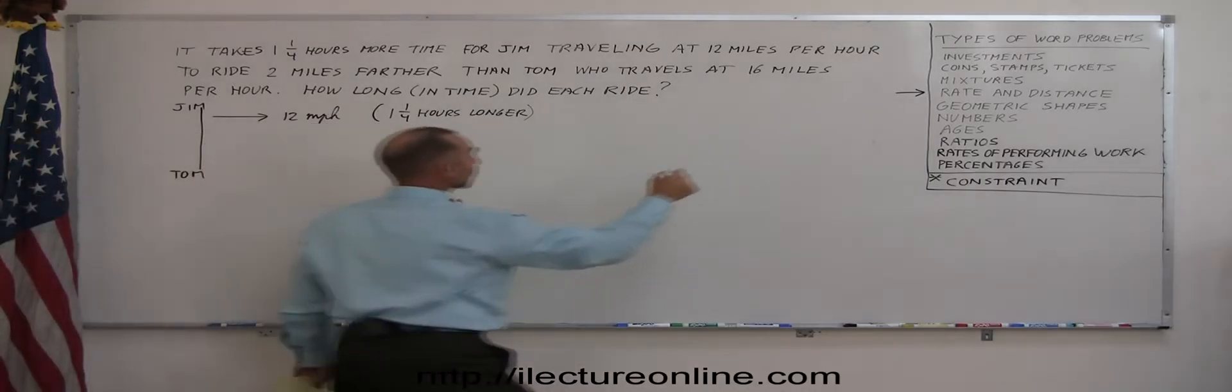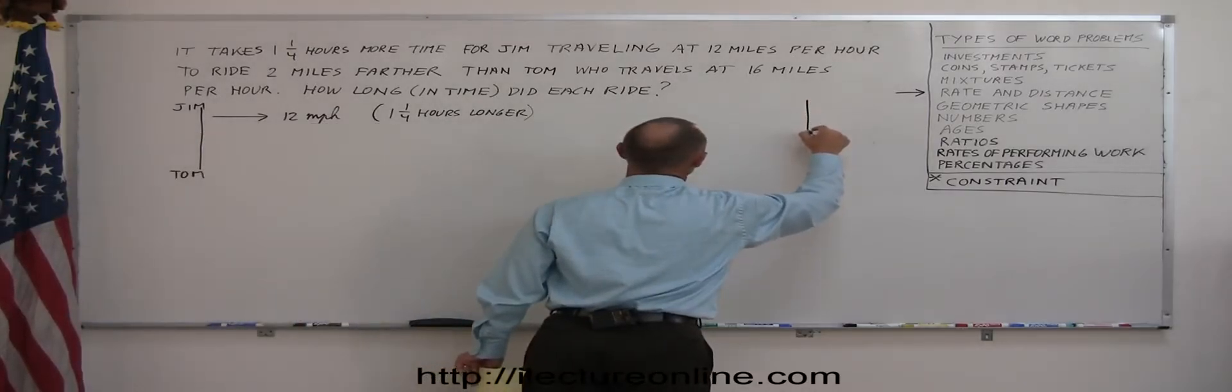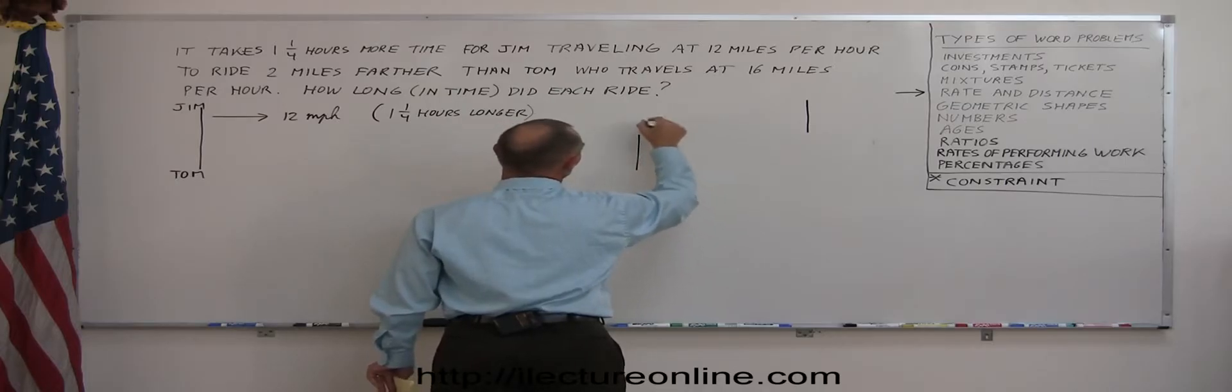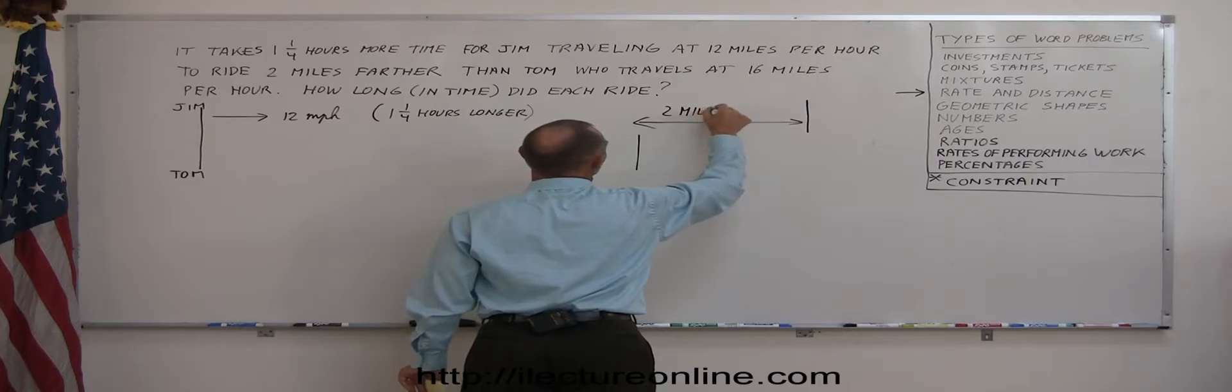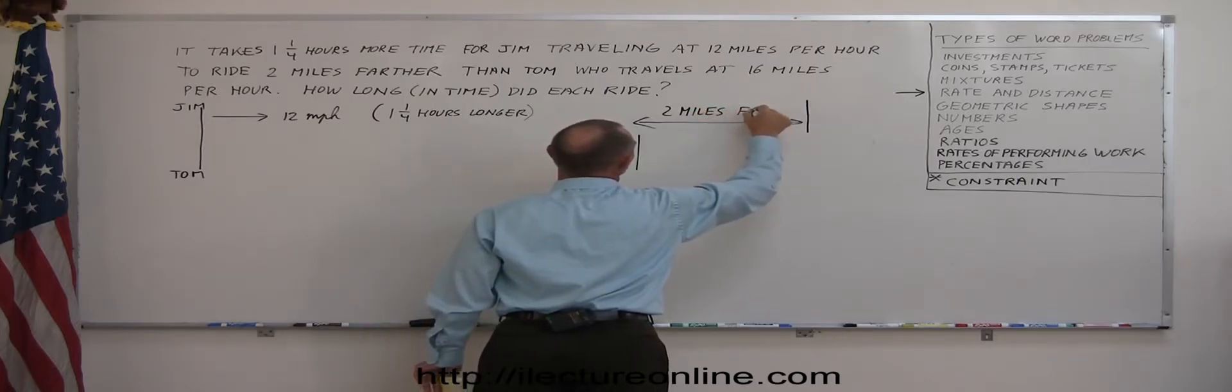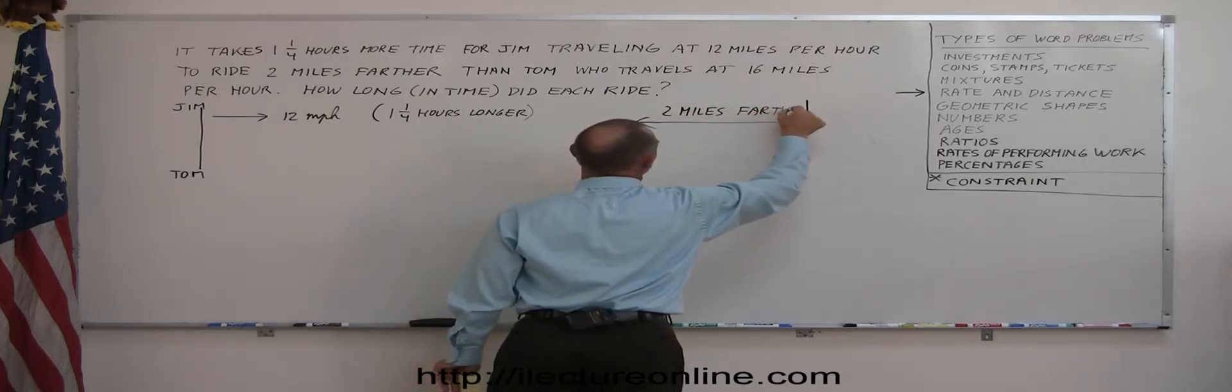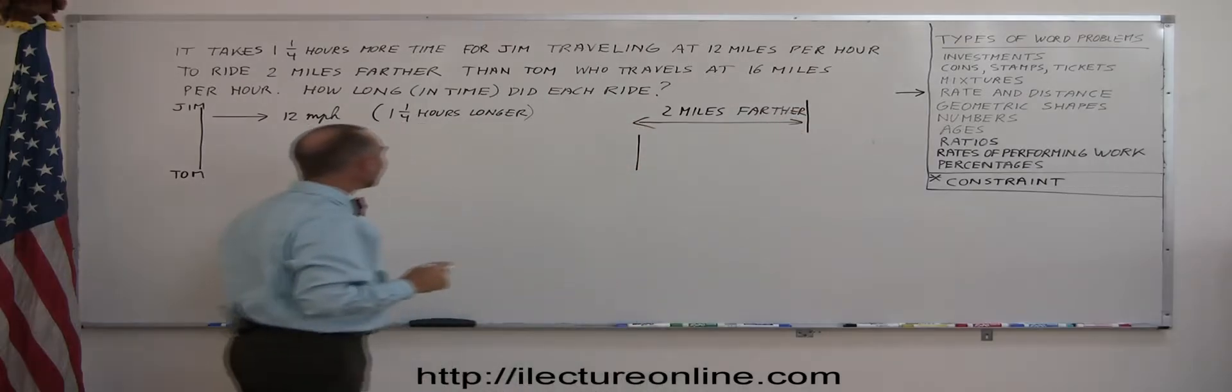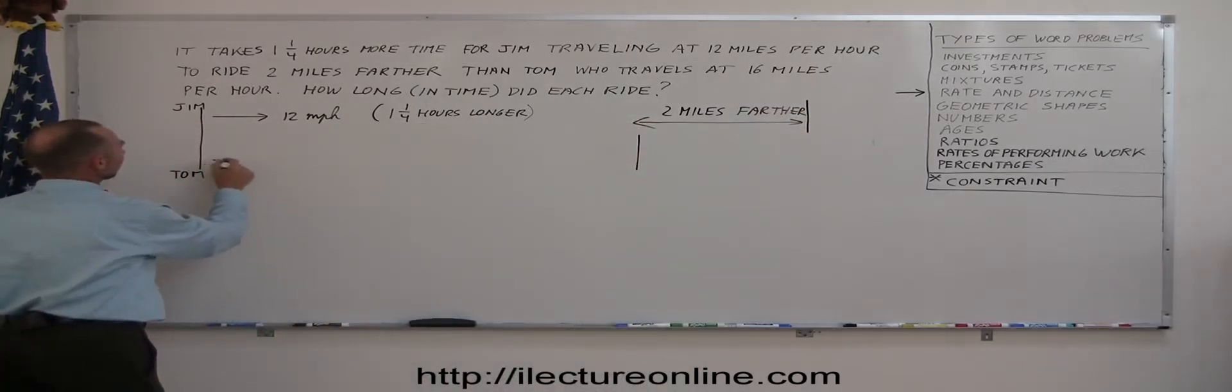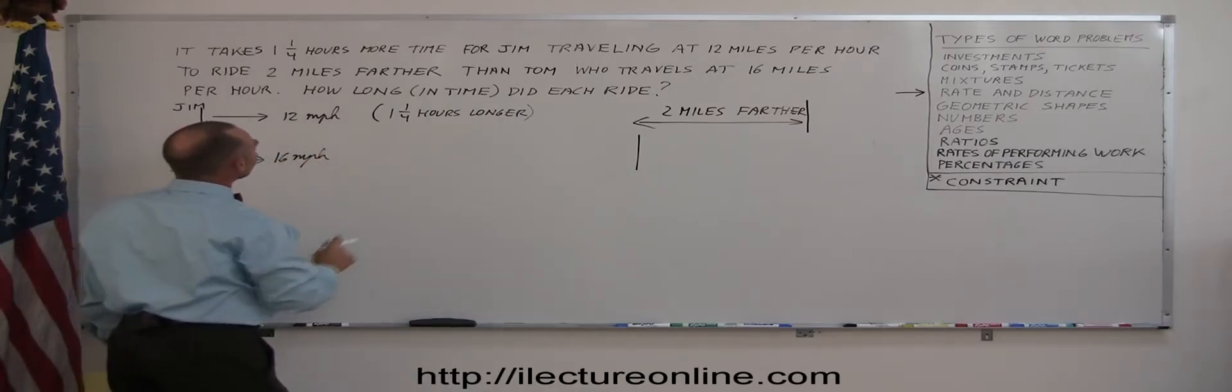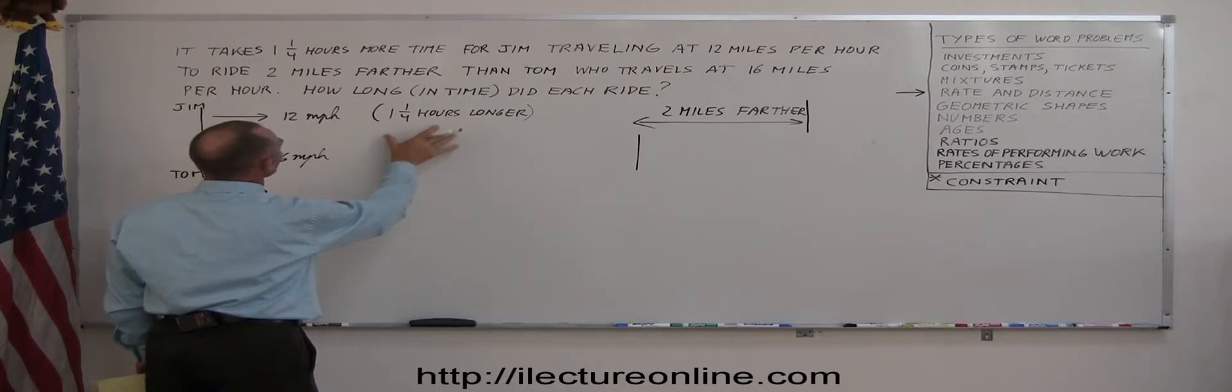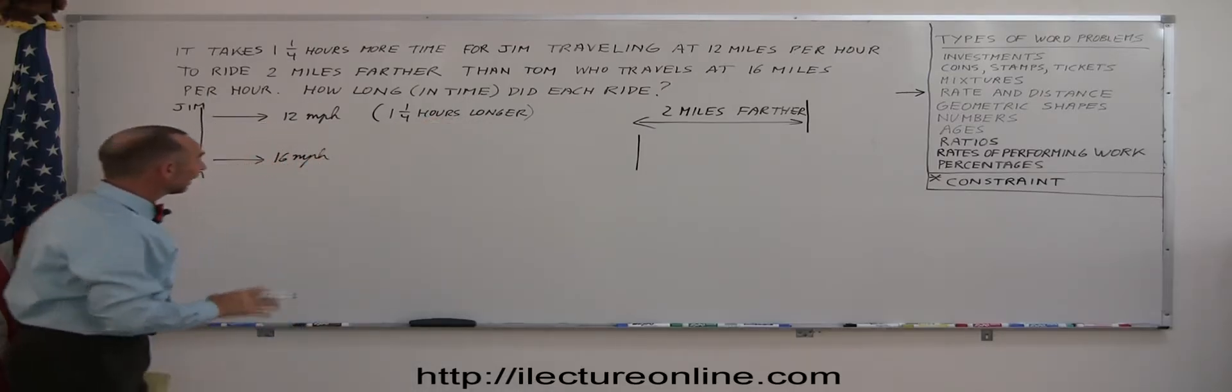I think if we draw a little diagram of that, it may make more sense. So let's try that. Let's say that both Tom and Jim travel starting from the same place. So Jim and Tom. So Jim travels at 12 miles per hour.